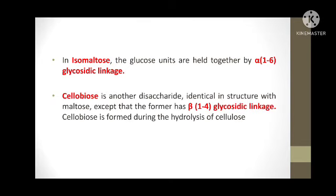The next suitable example for disaccharide is cellobiose. Cellobiose contains 2 beta-D glucoses, similar in structure to maltose, but it contains 2 beta-D glucoses held together by beta-1,4 glycosidic linkages. Cellobiose is formed during the hydrolysis of cellulose.